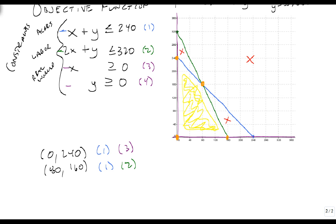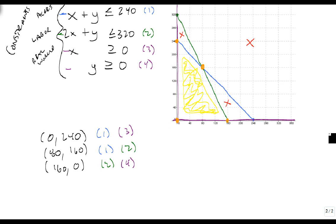Our third one is going to come from lines 4 and 2, and it's nice because it has a 0 for the y, and it's at 160 for the x. And our very last one that we're looking at comes from 3 and 4, and it gives us the point 0, 0.